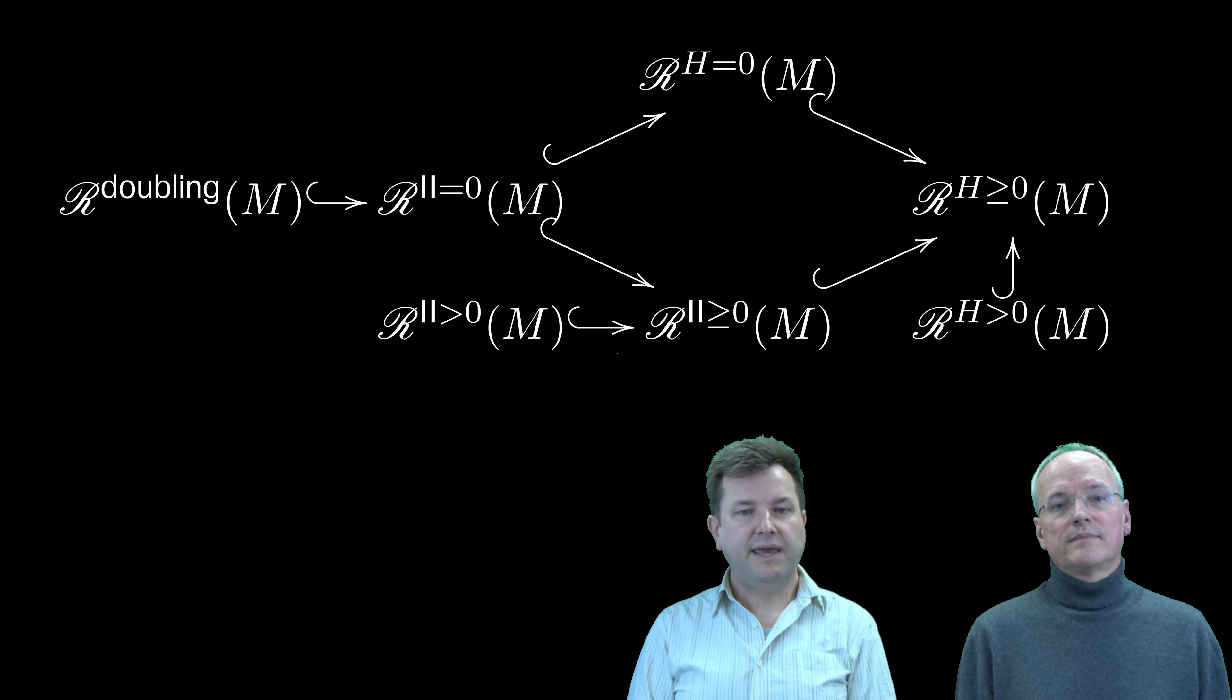Considering the spaces of PSC metrics on a compact manifold with boundary satisfying one of these boundary conditions, we prove that the inclusion maps in the diagram displayed behind us induce isomorphisms on all homotopy groups of these spaces.